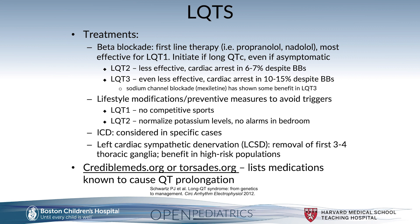Treatments for long QT syndrome tend to be beta blockade as a first-line therapy. It is most effective in type 1 and is generally initiated if a long QTc is present even if the patient is asymptomatic. In long QT type 2, beta blockade has been shown to be less effective, with cardiac arrest occurring in 6 to 7% of patients despite its use. In type 3, even less effective, with cardiac arrest present in upwards of 10 to 15% despite beta blockade. Sodium channel blockade, in particular mexiletine, has been shown to provide some benefit in long QT type 3. Additional treatments include lifestyle modification and prevention of certain triggers.